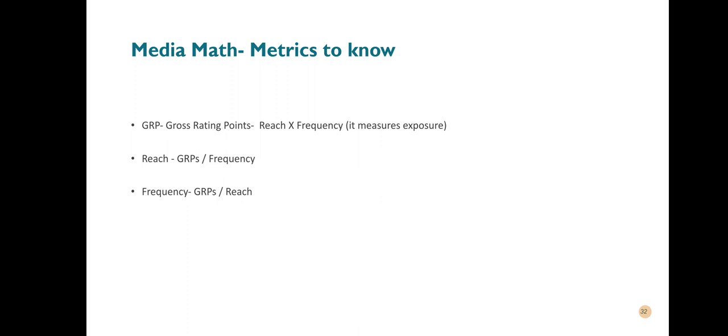We've already talked about reach and frequency. These formulas are just to help you. Sometimes you may know the Gross Rating Point but not the reach, so to find the reach — the percentage of the audience that will see your ad — you do: GRP divided by frequency. And when you want to find out the frequency and you have the reach and the GRP, it will be GRP divided by reach.